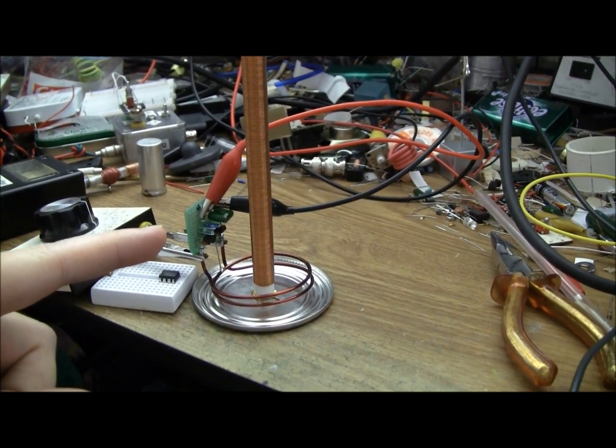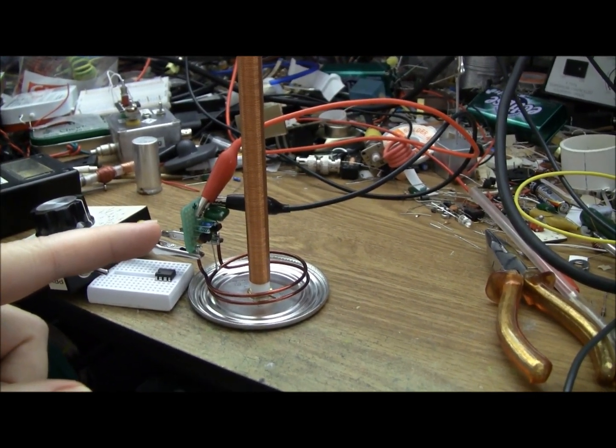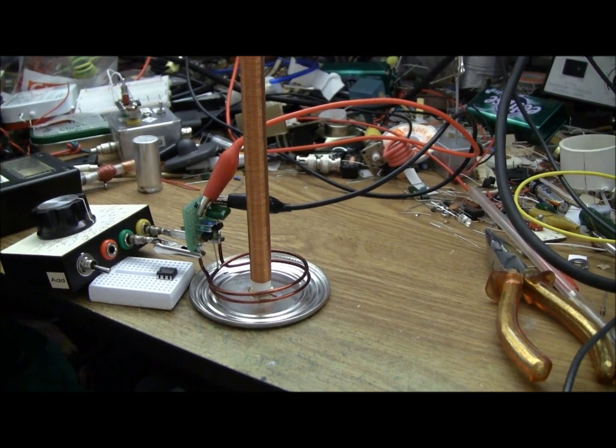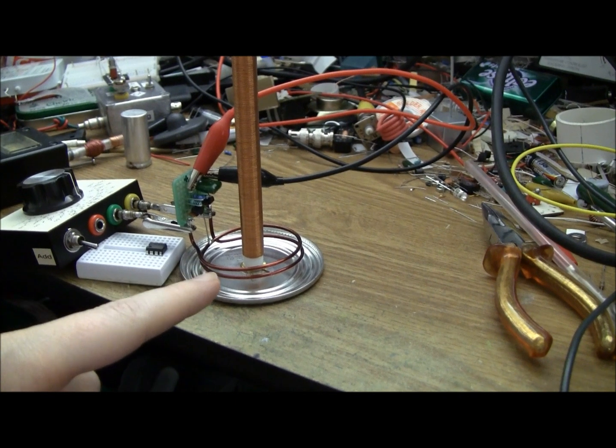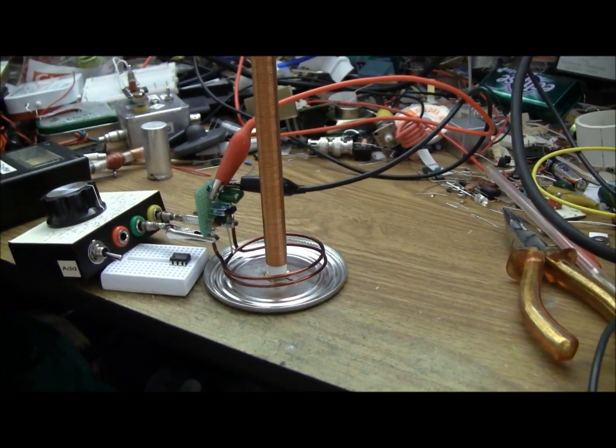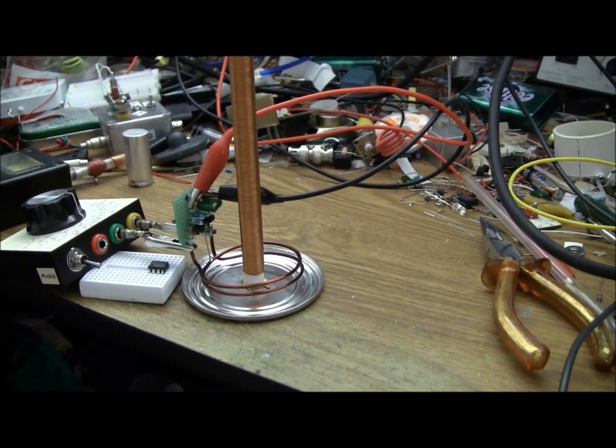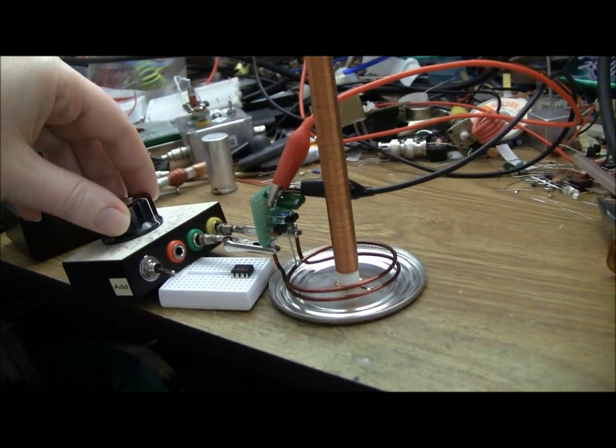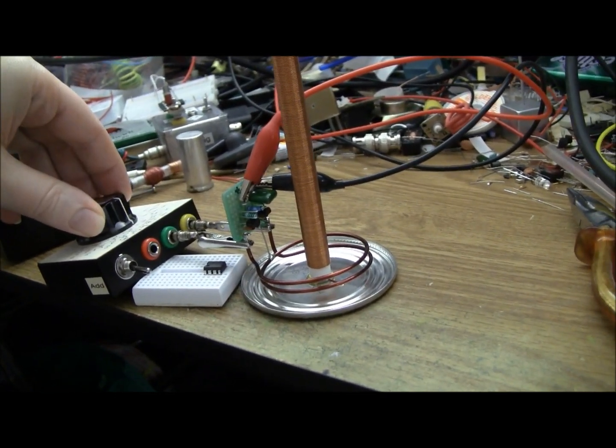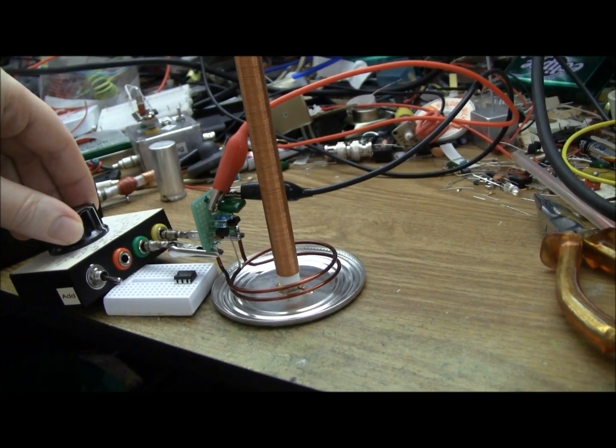Down here we have a power oscillator. It's built using a pair of push-pull 2N7000 MOSFETs. It's driving a little tank coil here with about 360 nanohenrys of inductance and I'll put my C jig here on it so I can tune it to the resonance of the secondary.